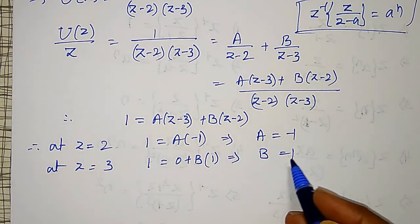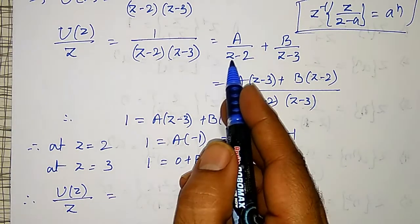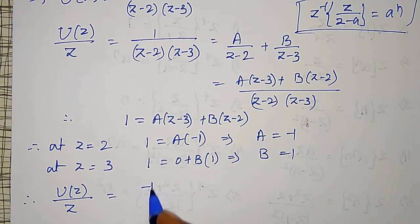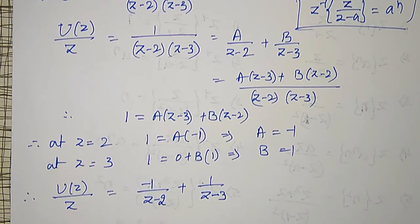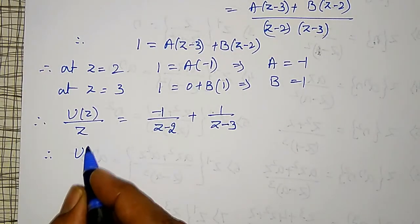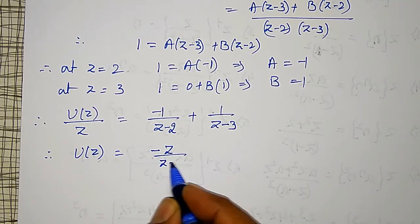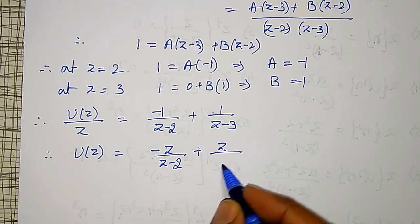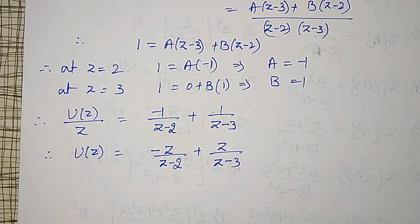Substituting A equal to minus 1 and B equal to 1, U of z divided by z equals minus 1 divided by z minus 2 plus 1 divided by z minus 3. Now multiplying both sides by z, U of z equals minus z divided by z minus 2, plus z divided by z minus 3.